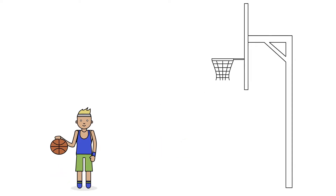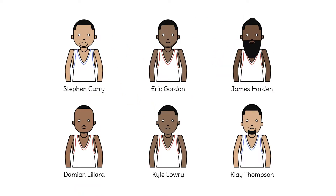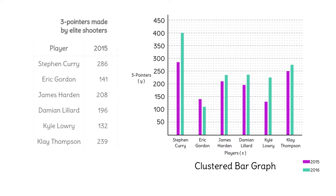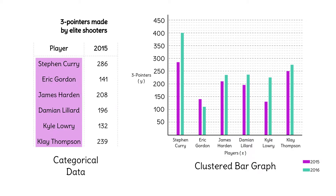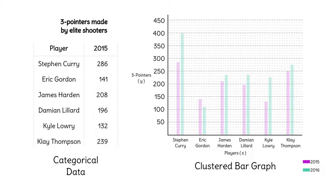Professional basketball is full of players who shoot three-point shots easily. Stephen Curry is the most famous of these great shooters, but there are other good ones too. Here's a clustered bar graph of six of the best, showing the number of three-pointers they each made in two recent seasons. We call this categorical data. The category is the player, and the data is the number of threes made in each season. Each player gets two bars, one for 2015 and one for 2016.